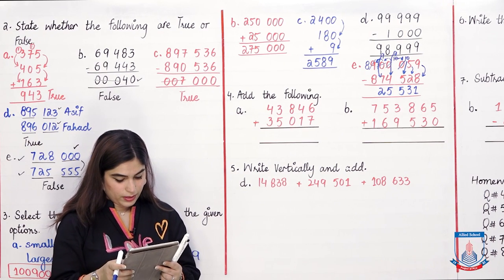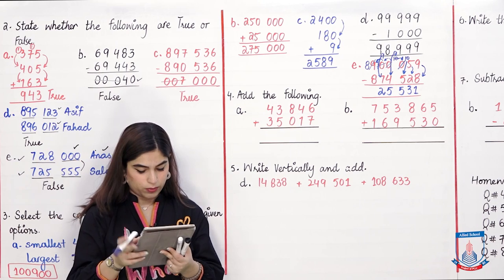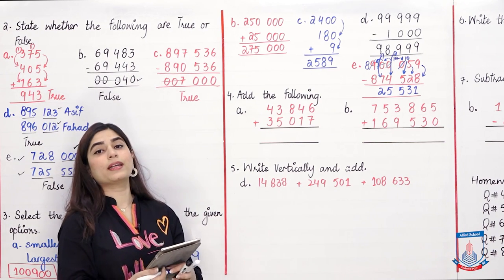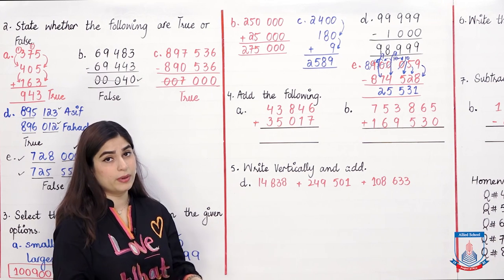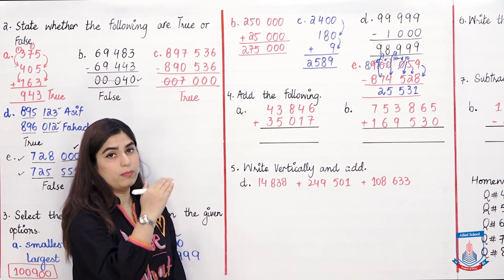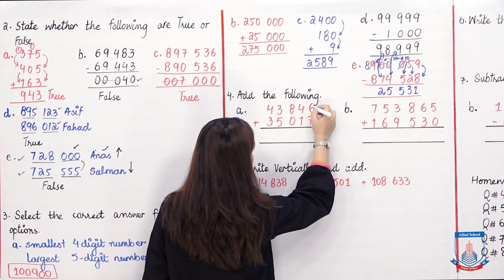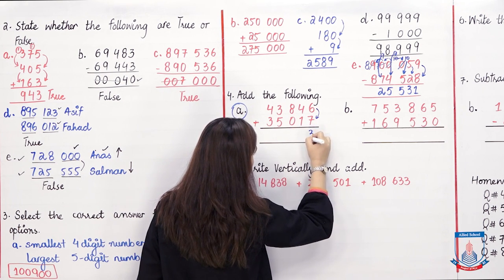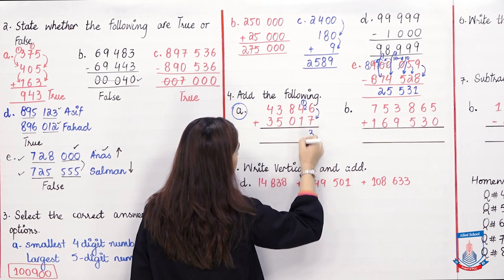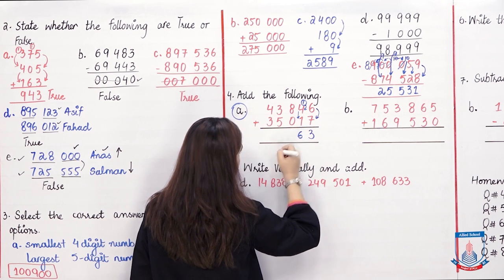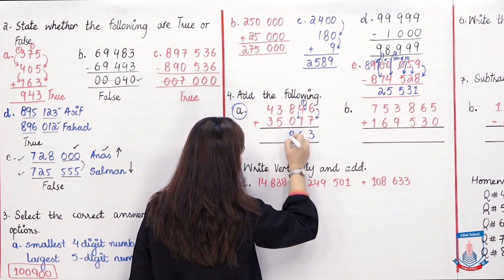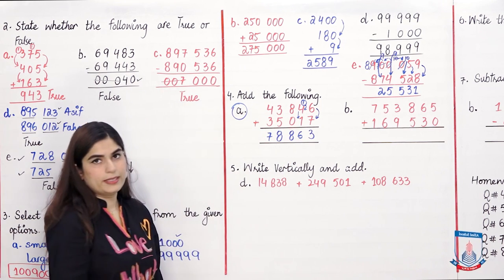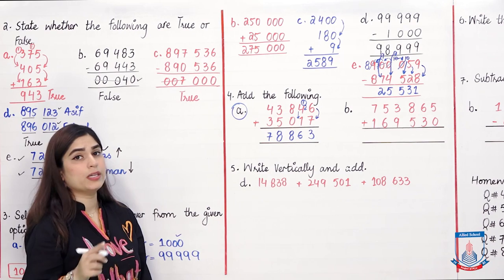Question 4: Add the following. I will solve Part A. We have values written vertically. When a sum is 10 or more, write the units digit and carry the tens digit to the next column. 6 plus 7 is 13 — write 3, carry 1. 1 plus 4 is 5, plus 1 is 6. 8 plus 0 is 8. 3 plus 5 is 8. 4 plus 3 is 7. Knowing how to give and take carry is the key skill.